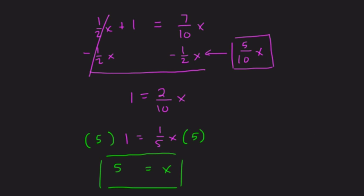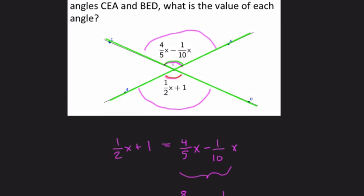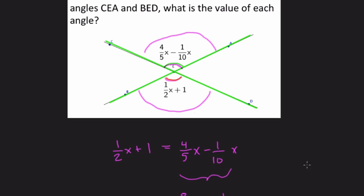This is the measure of x, but they want the value of the angles. I'm going to plug it into my equation here. We have 1/2 of 5 plus 1. 1/2 of 5 is 2.5, plus 1 is 3.5. So we have 3.5 degrees. That's the measure of each angle.